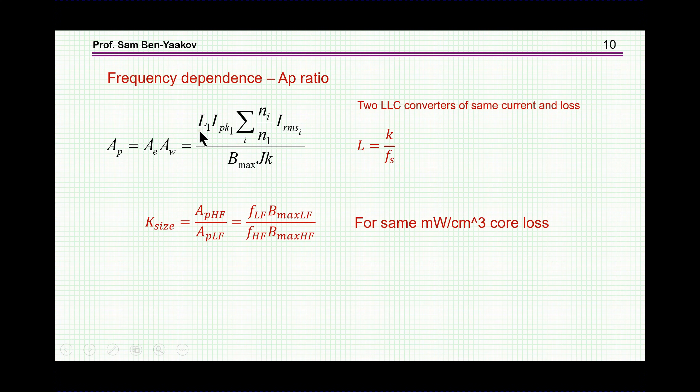We are just left with L, the inductance, and B_max, which are frequency dependent, and then I can divide AP for the high frequency by the AP of the low frequency, and turns out that this factor is then the frequency times B_max, that is, the low frequency times B_max low frequency, and frequency, the high frequency times B_max of the high frequency. This is actually a sort of figure of merit. This is, of course, for a given loss core law.